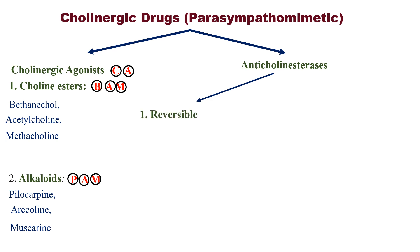Anti-cholinesterases are further divided into reversible and irreversible. For reversible, remember CA — the same as cholinergic agonists — and for irreversible, remember CO.